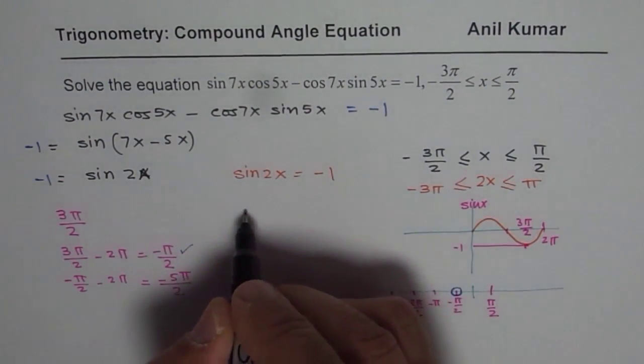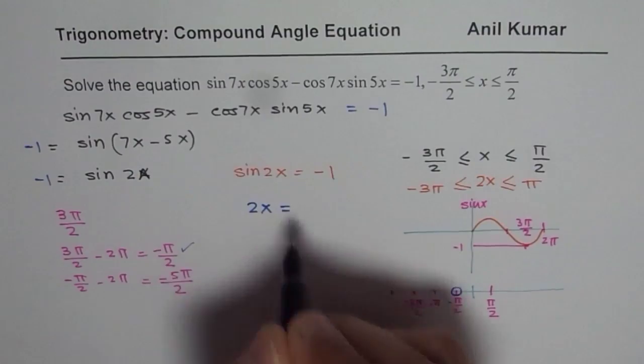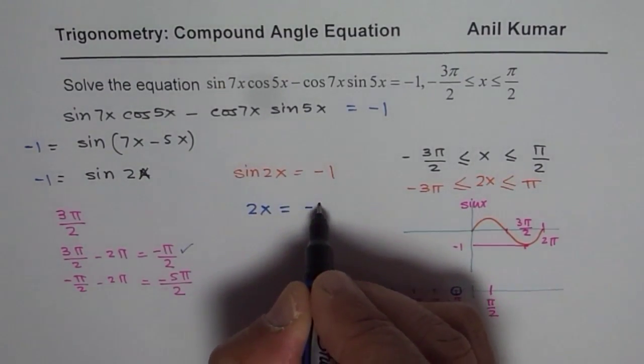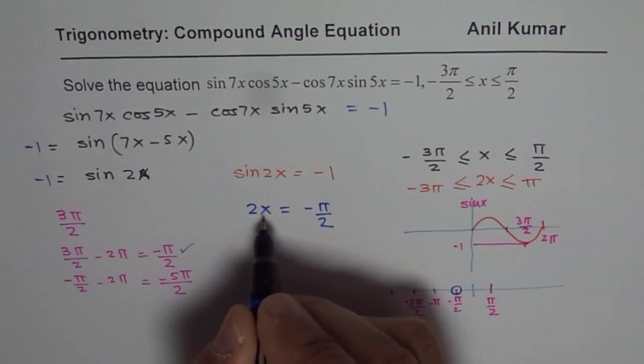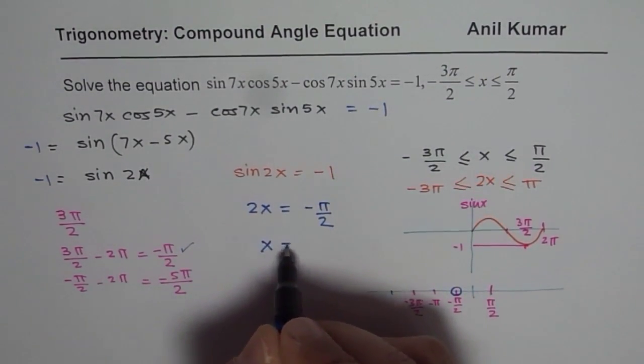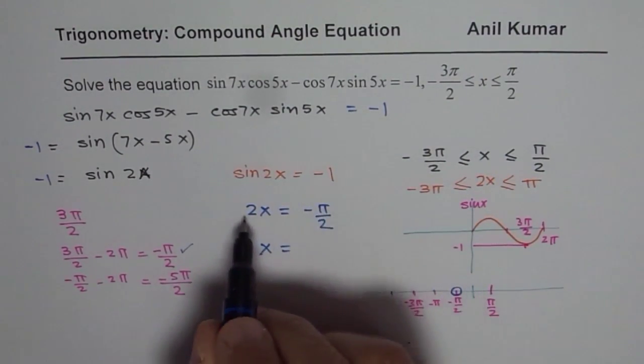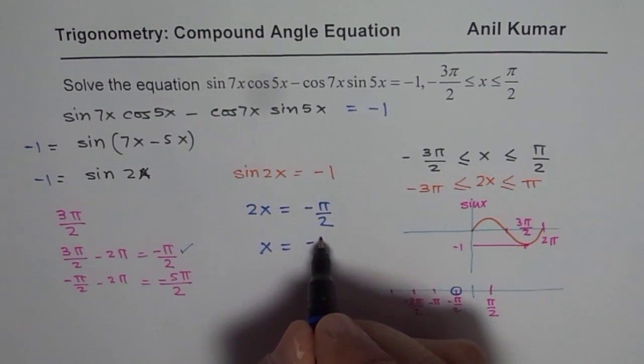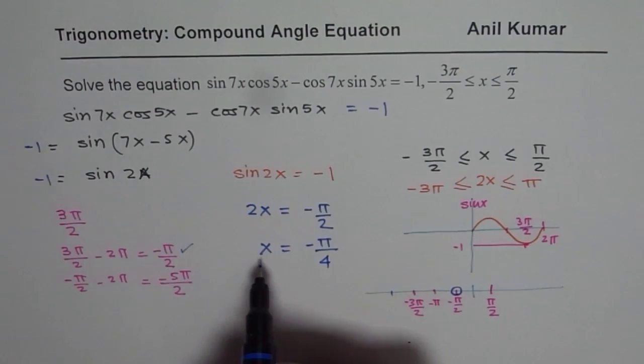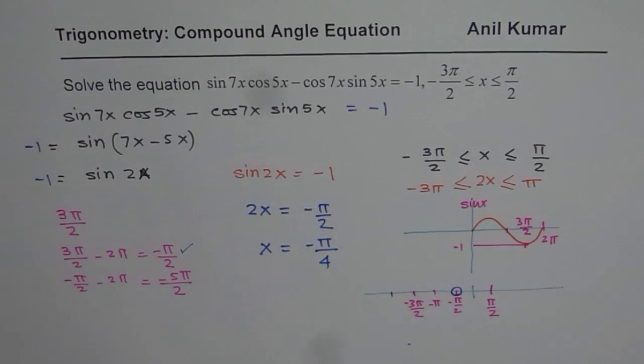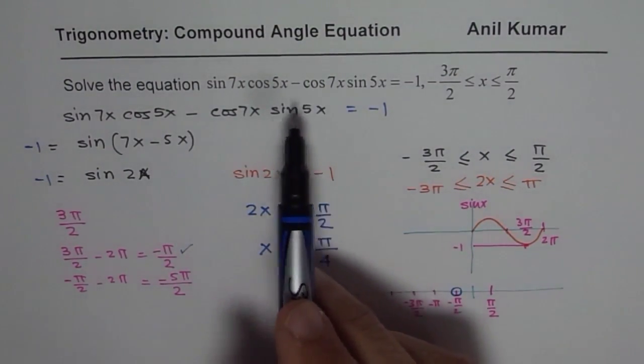We say 2x is equals to minus pi by 2. We are talking about that domain. So x will be equal to, we will divide this by 2, we get minus pi by 4. That is the value of x minus pi by 4.